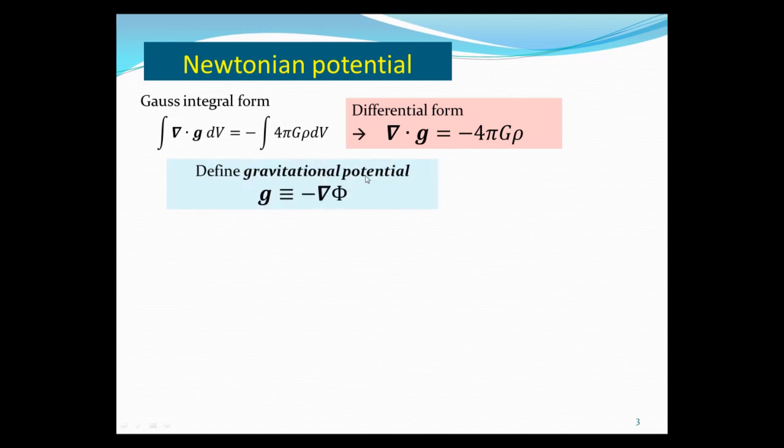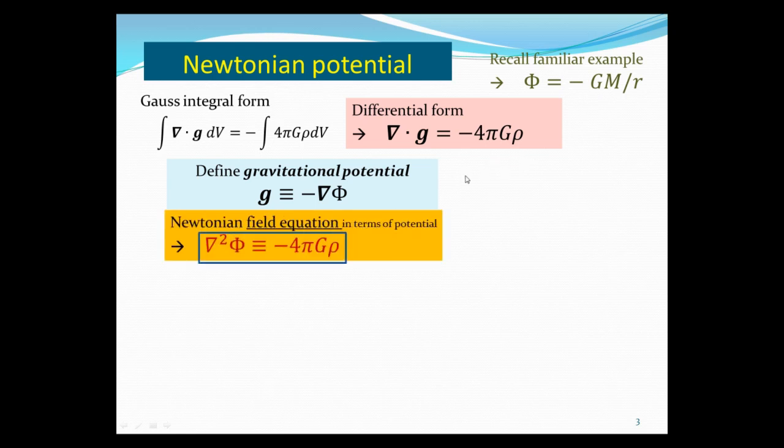Now, I actually will prefer to write this in terms of gravitational potential, which is defined to be the G is equal to minus the gradient of the potential phi. In case you don't remember what potential is, remember the familiar case, if you have a spherical symmetric mass m, then its gravitational potential is simply gm over r. So therefore, Newton's field equation, which is Gauss's law, is simply written to potential, is saying that the Laplacian of the gravity potential is equal to 4 pi G times rho.